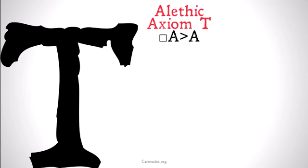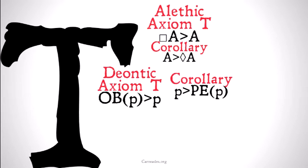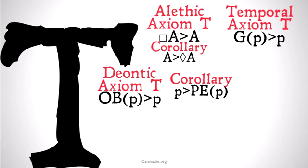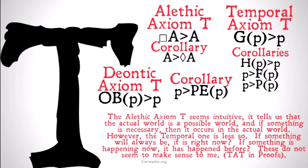The alethic axiom T looks like: necessarily A implies A, and the corollary is that A implies it's possible that A. The deontic axiom T was: it's obligatory that P implies P, and the corollary was P implies it's permissible that P. For temporal logic, we have G,P implies P — it's going to always be the case that P implies that P is the case now — and we have similar corollaries.